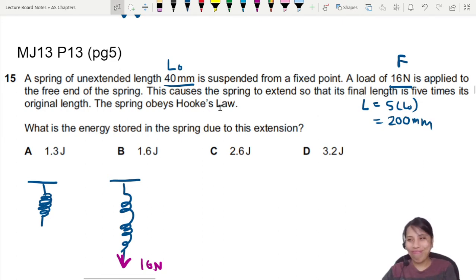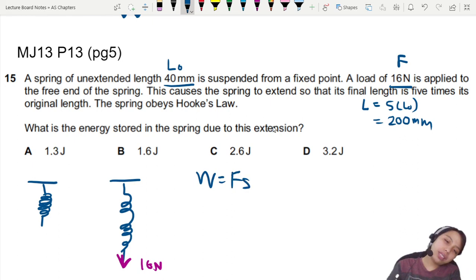So now the new length will be five times of L0, which will be 200 millimeter. Wow, so long. Okay, and the spring obeys Hooke's law. Good to know. What is the energy stored in the spring due to this extension? You know, if you say miss, can we use force times distance?